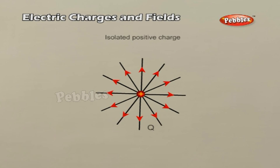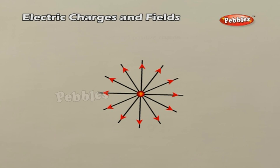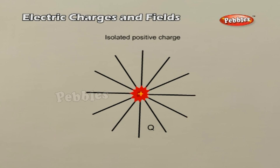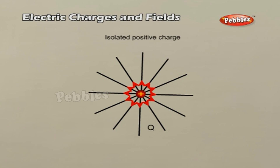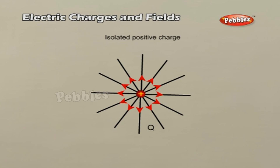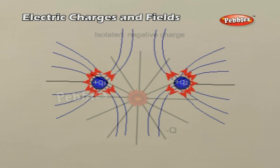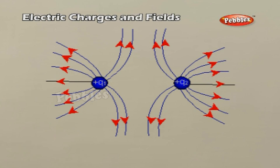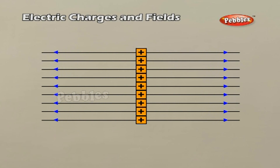Electric Field Lines. Michael Faraday introduced the idea of lines of force — a way of pictorially mapping the electric field around a configuration of charges. They are curves drawn such that the tangent at each point is in the direction of the net field at that point. An arrow on the lines of force is essential to indicate the direction. For a positively charged body, electric lines of force are directed away from the body; for a negatively charged body, they are directed towards it. When two positively charged bodies are involved, the lines of force give a vivid picture of mutual repulsion. For two equal and opposite charges, the lines show mutual attraction, moving from positive to negative.